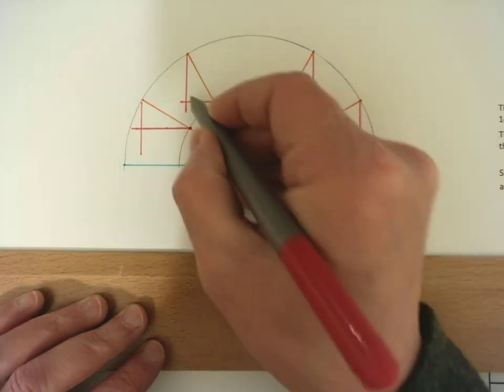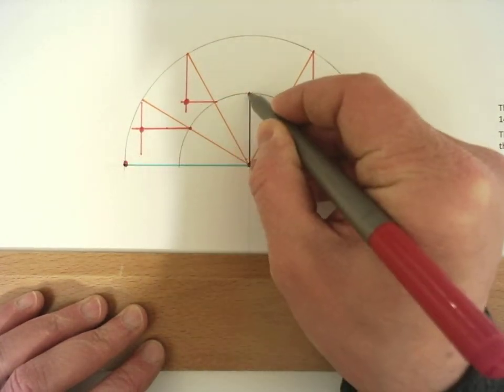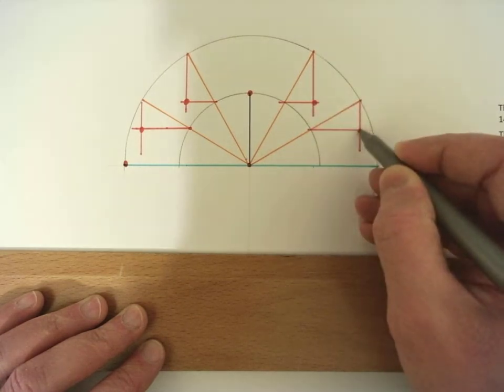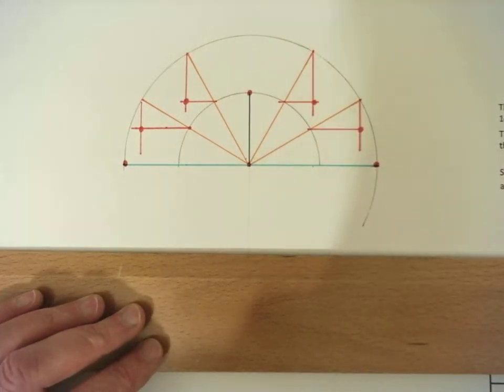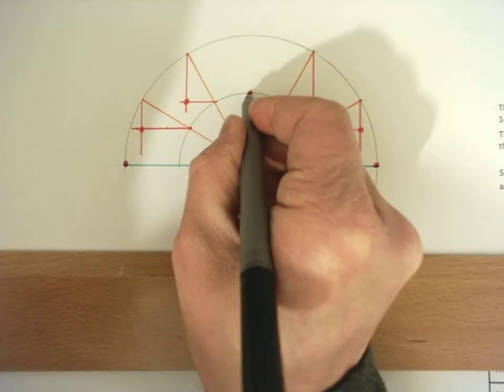And after that we have points on our curve which we can use to draw our ellipse. Our ellipse has to be drawn freehand.